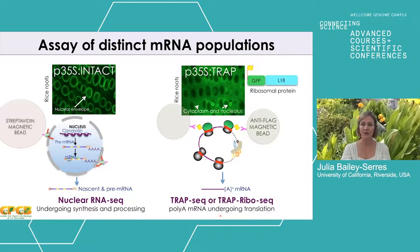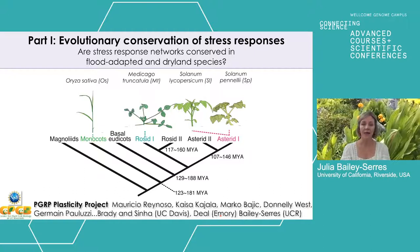Together with our collaborators in an NSF-funded PGRP project — which we call the Plasticity Project — Mauricio, Germán, Kaisa Kahala, Marco Bacek, Donnelly West, and Germán Paluzzi, in the groups of Shaban Brady and Nalima Sinha at UC Davis and Roger Deal at Emory University, did a comparison of stress responses across four species: rice, Medicago, Solanum lycopersicum (tomato), and a wild dryland species, Solanum pennellii.